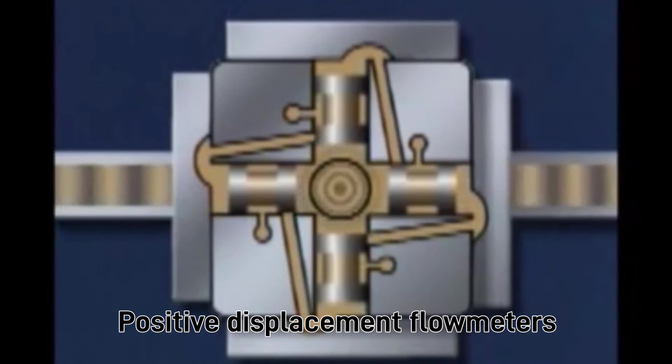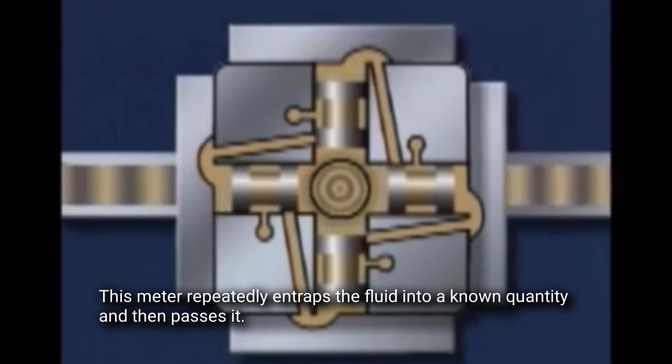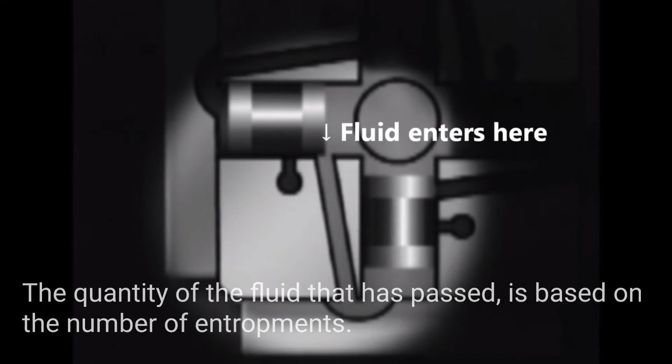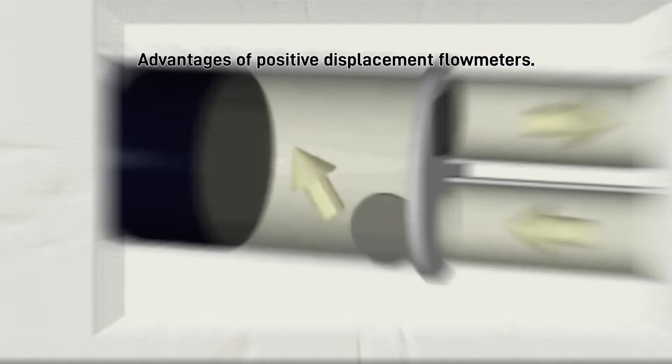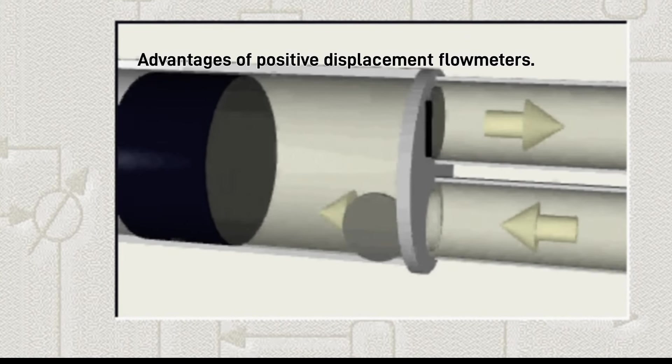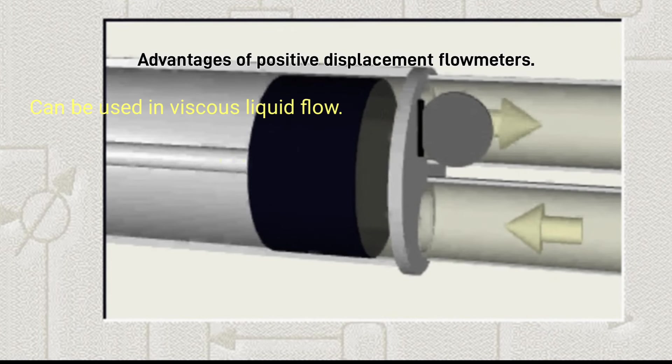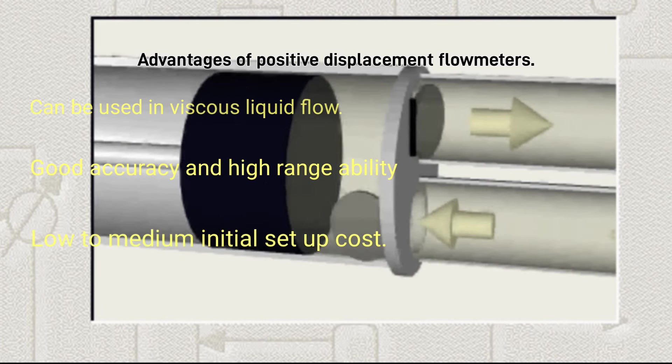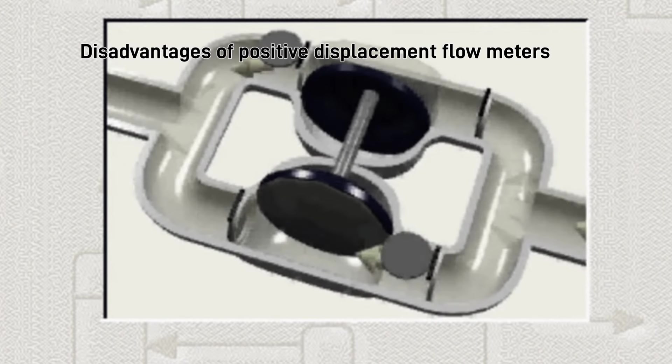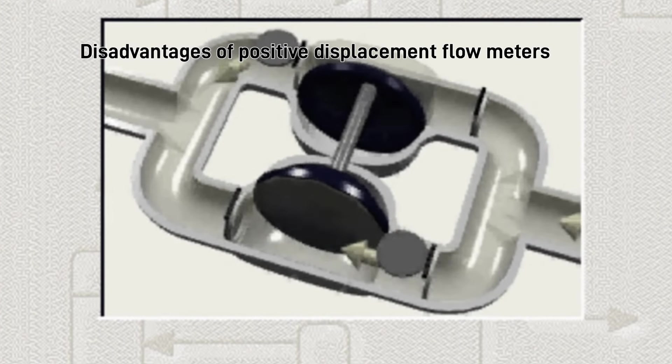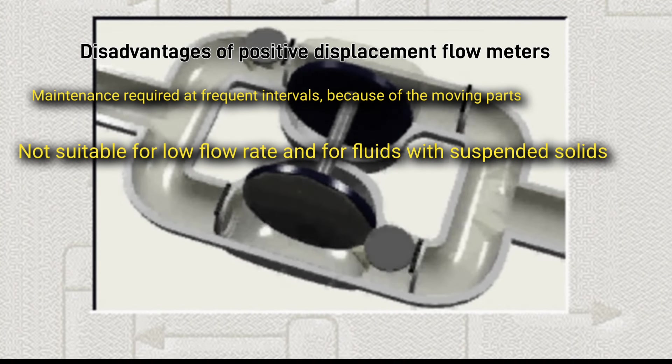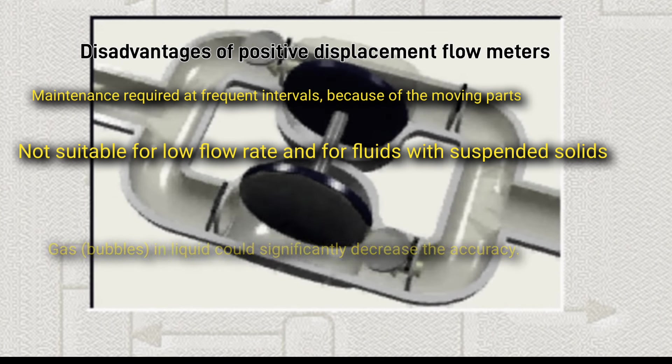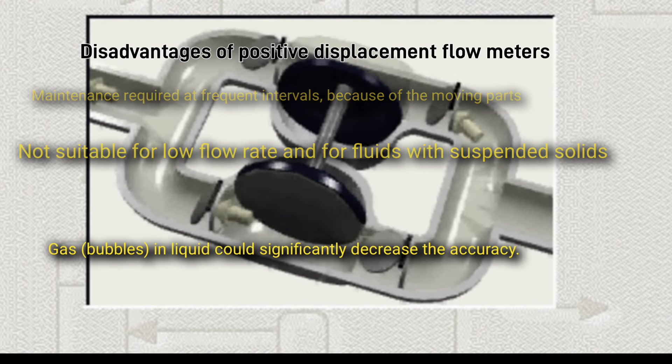Positive displacement flow meters. This meter repeatedly entraps the fluid into a known quantity and then passes it. The quantity of the fluid that has passed is based on the number of entrapments. The volume flow rate can be calculated from the revolution rate of the mechanical device. Advantages: can be used in viscous liquid flow, good accuracy and high range ability, low to medium initial setup cost. Disadvantages: maintenance required at frequent intervals because of moving parts, not suitable for low flow rate and for fluids with suspended solids, gas bubbles in liquid could significantly decrease the accuracy.